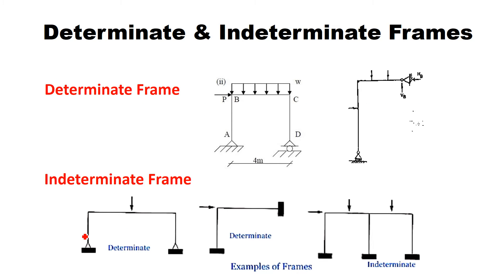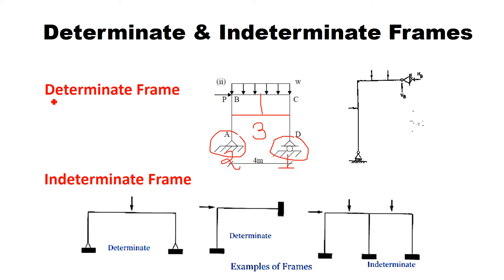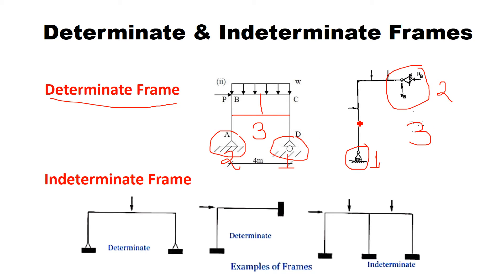We have a few more structures like frame structures. If you look at this frame, on the left hand side there is a hinge support and on the right hand side there is a roller support. It has two columns and one beam. Since there is one hinge support and one roller support, total reactions will be three — two at hinge support and one at roller support. So it is a determinate frame. Similarly, if there is one column and one beam with a roller support giving one reaction and a hinge support giving two reactions, total reactions are three — this is also a determinate frame.